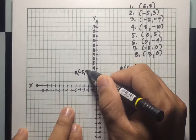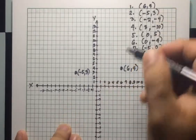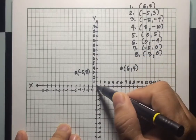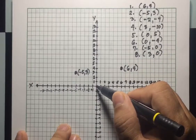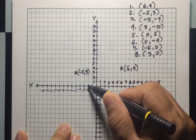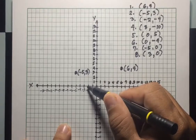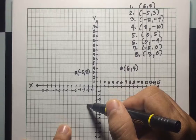For number three, the point is (-2, -4). Starting from the origin, X is negative two so move to the left two units: one, two. Y is negative four so move downwards four units: one, two, three, four. This is point (-2, -4).